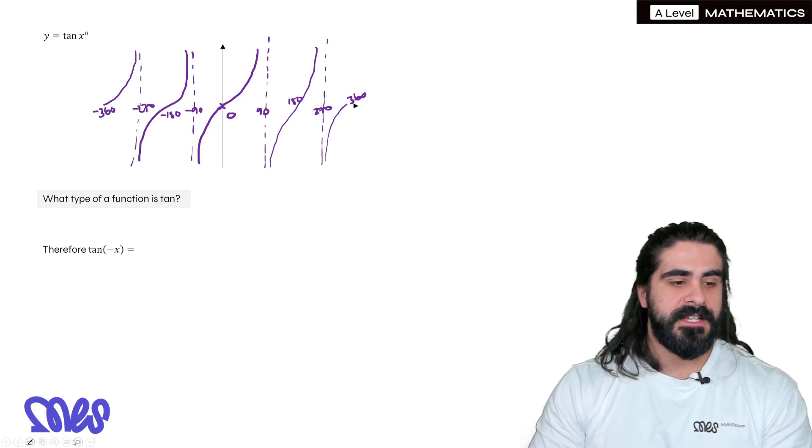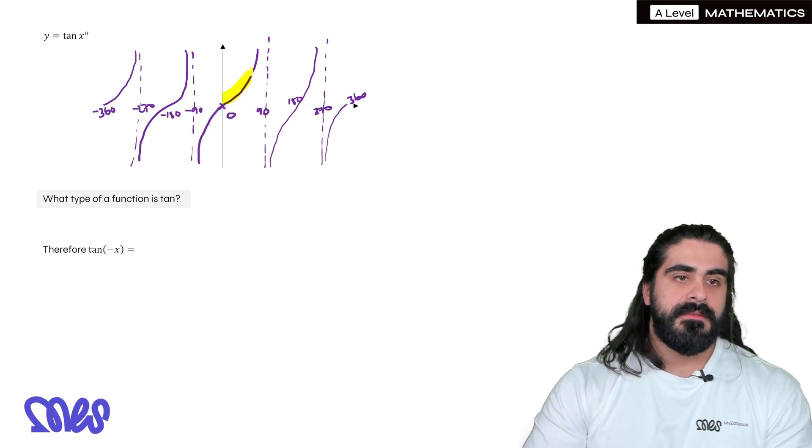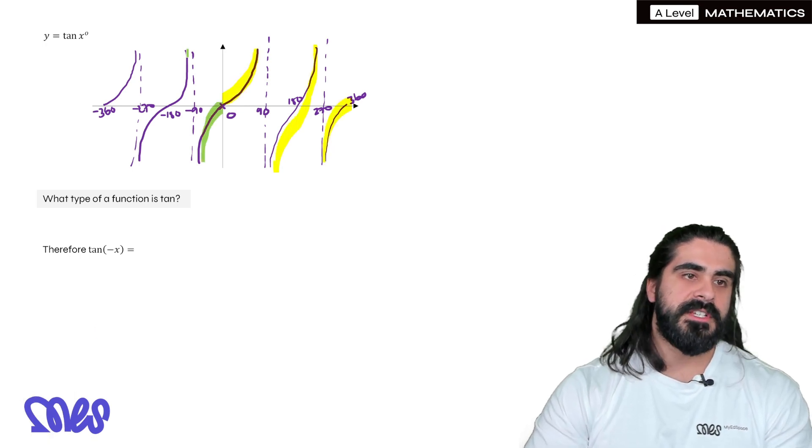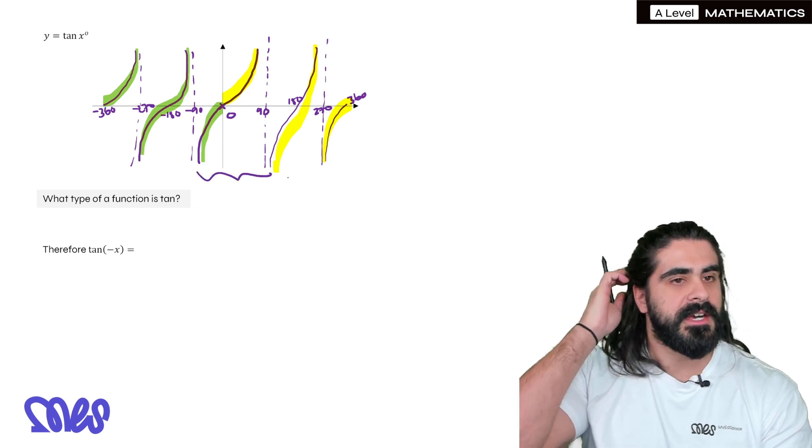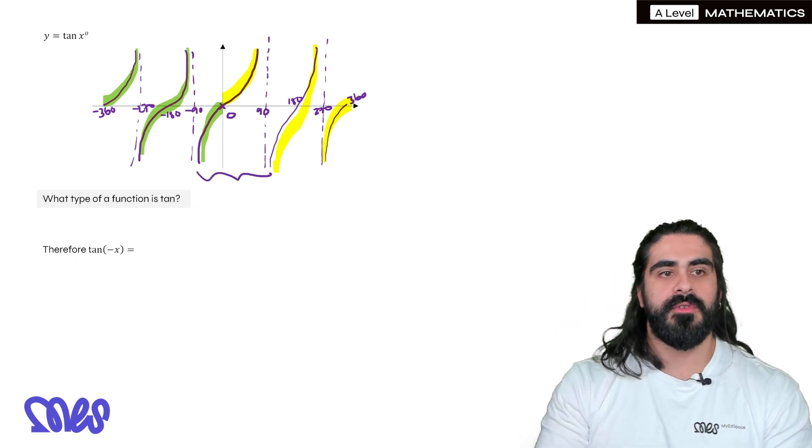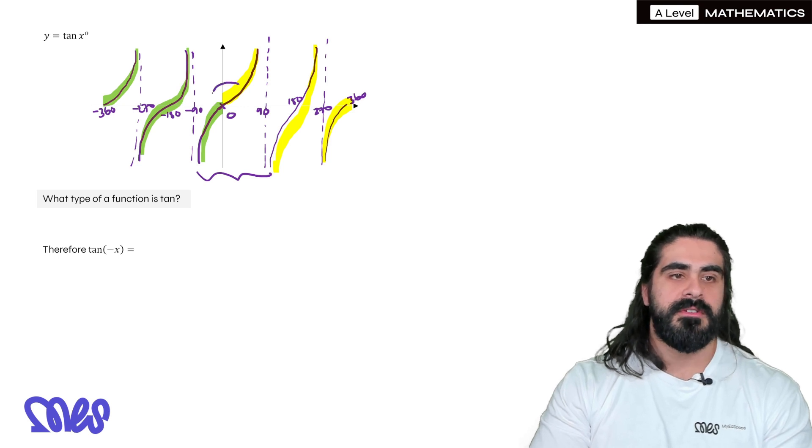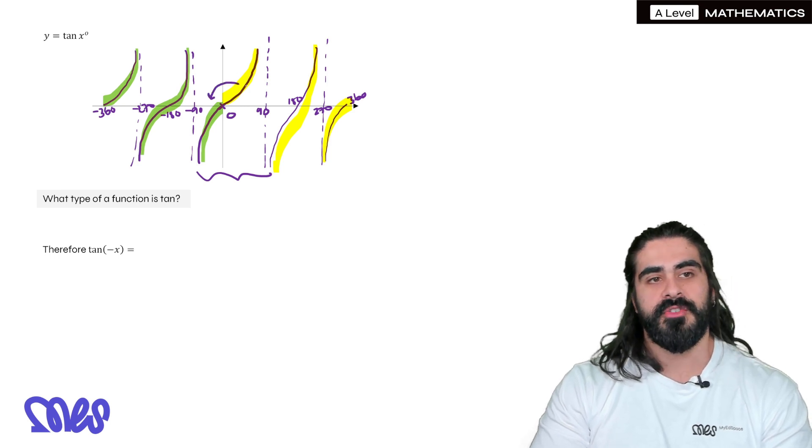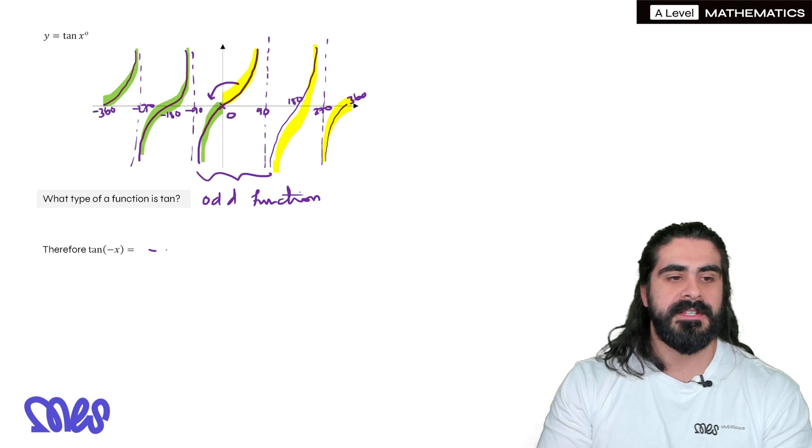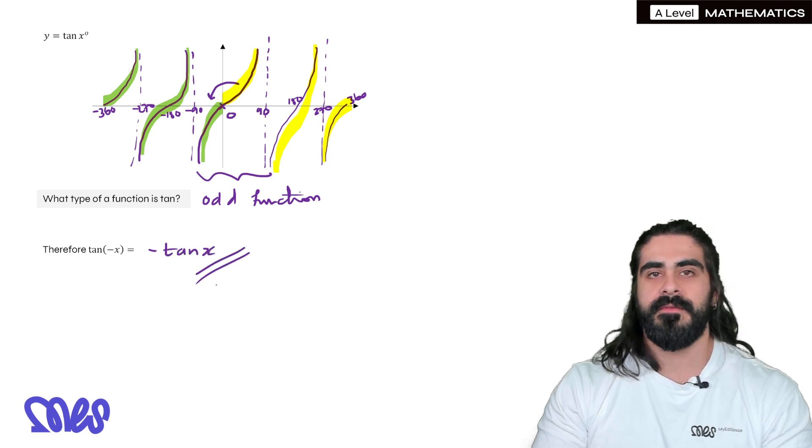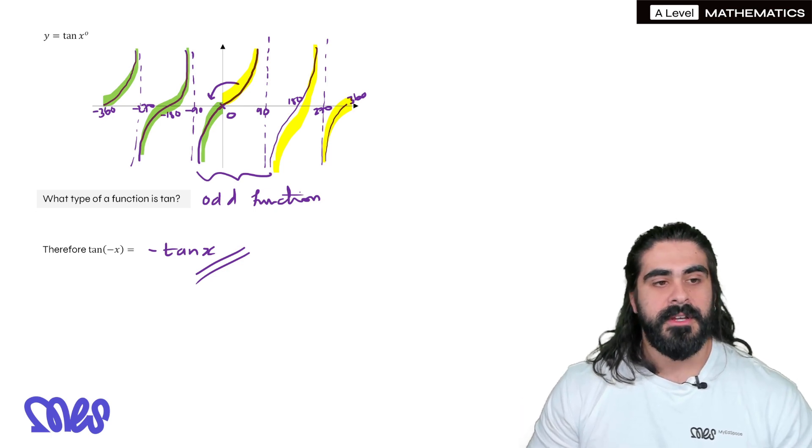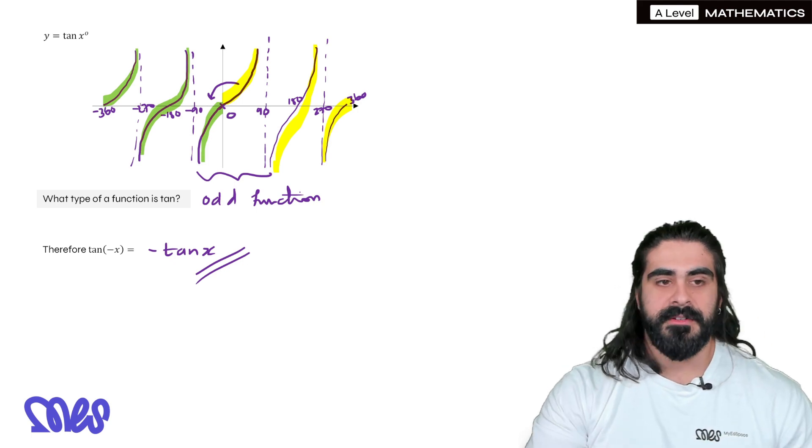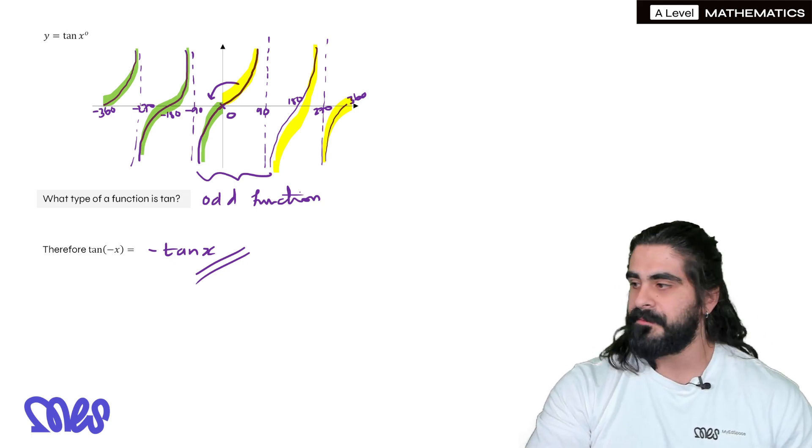Okay, what type of function is tan? So you have this section of the graph. Now to decide, all you need to look at is the part of the tan graph between minus 90 and 90, and then you can decide. Now, does it look like an even or an odd function? Well, clearly it's an odd. You're rotating 180 degrees. Therefore, tan of minus x is the same as negative of tan x. And you can verify that. Maybe do tan of minus 45 degrees is minus one, and that's the negative of tan of 45 degrees, because tan of 45 degrees is one.